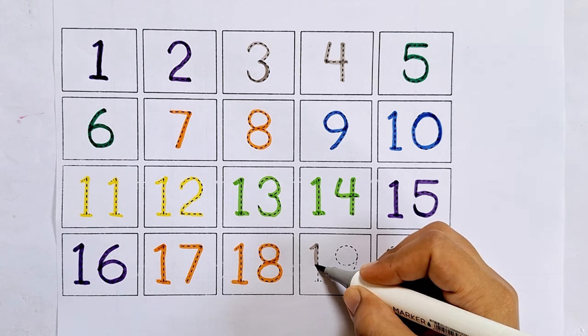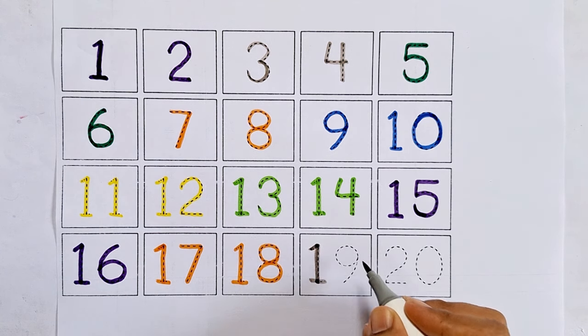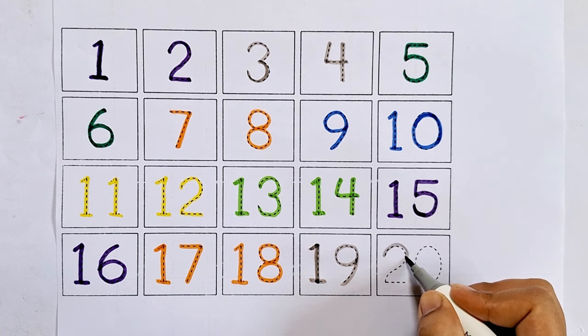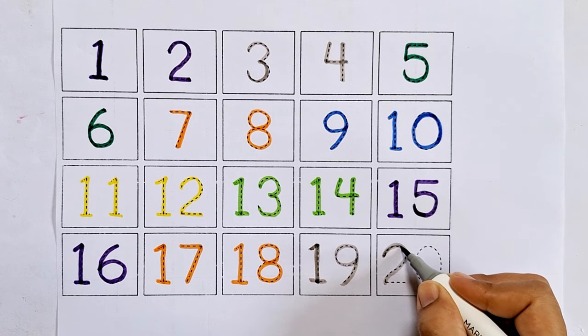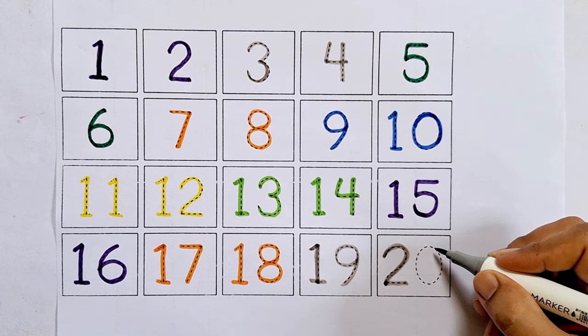Nineteen. After eighteen comes nineteen. Twenty. Two zero, twenty. After nineteen comes twenty.